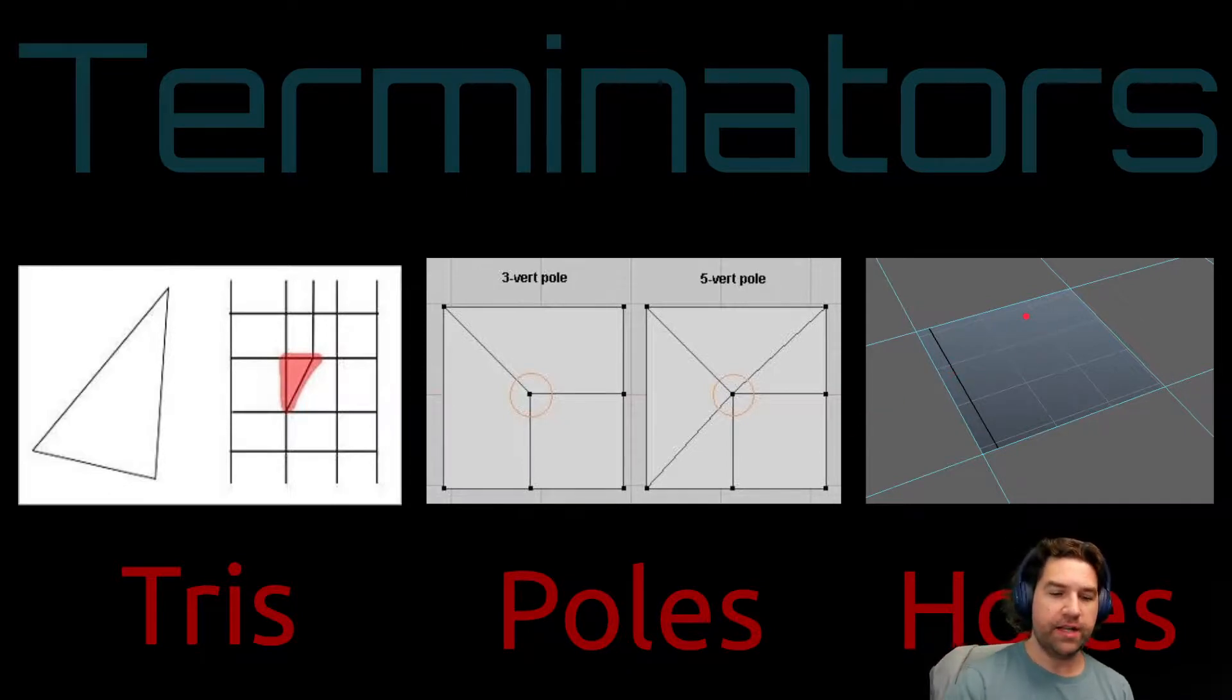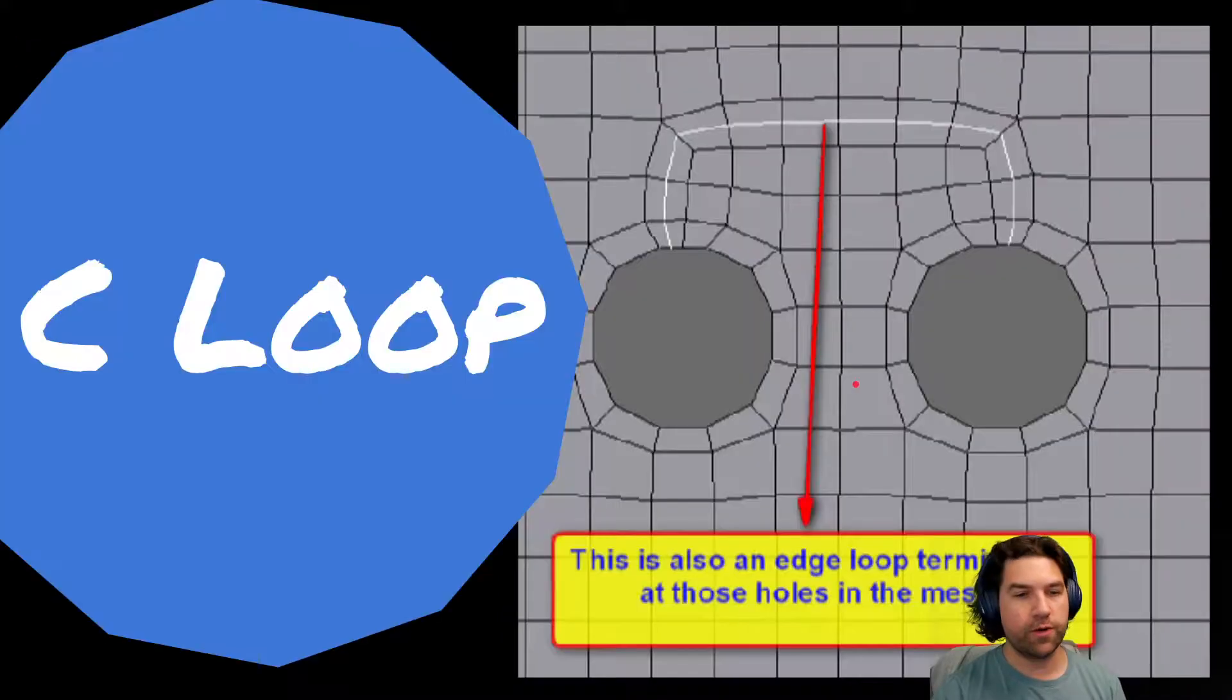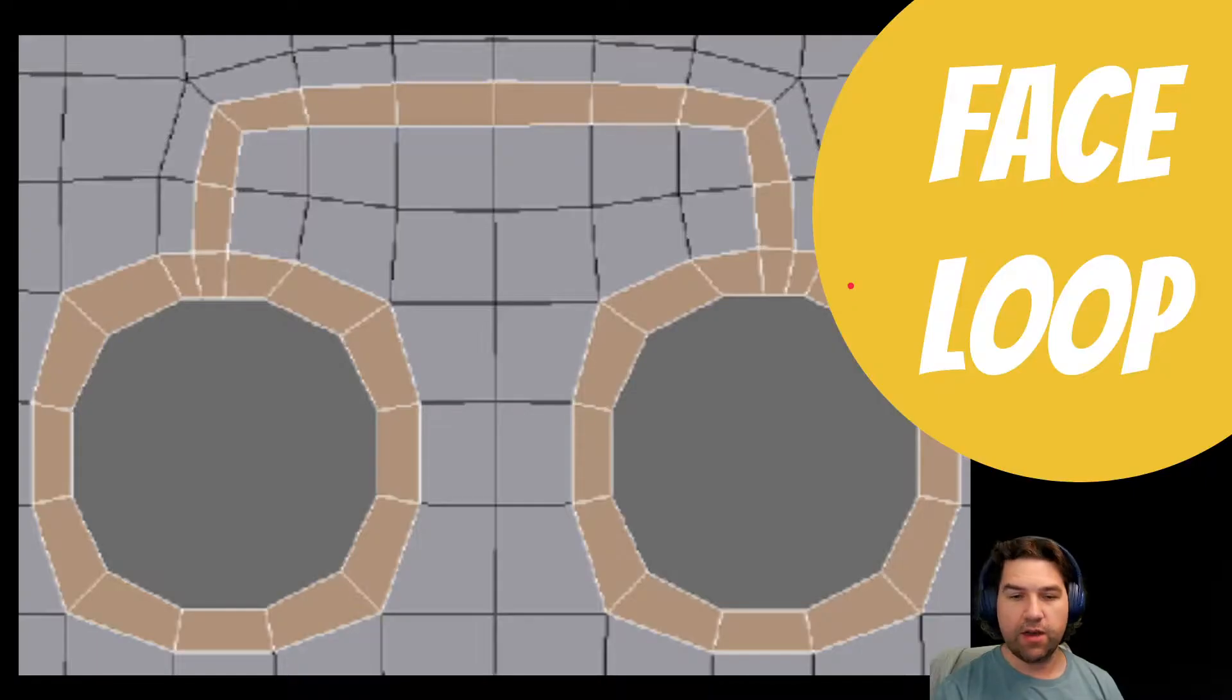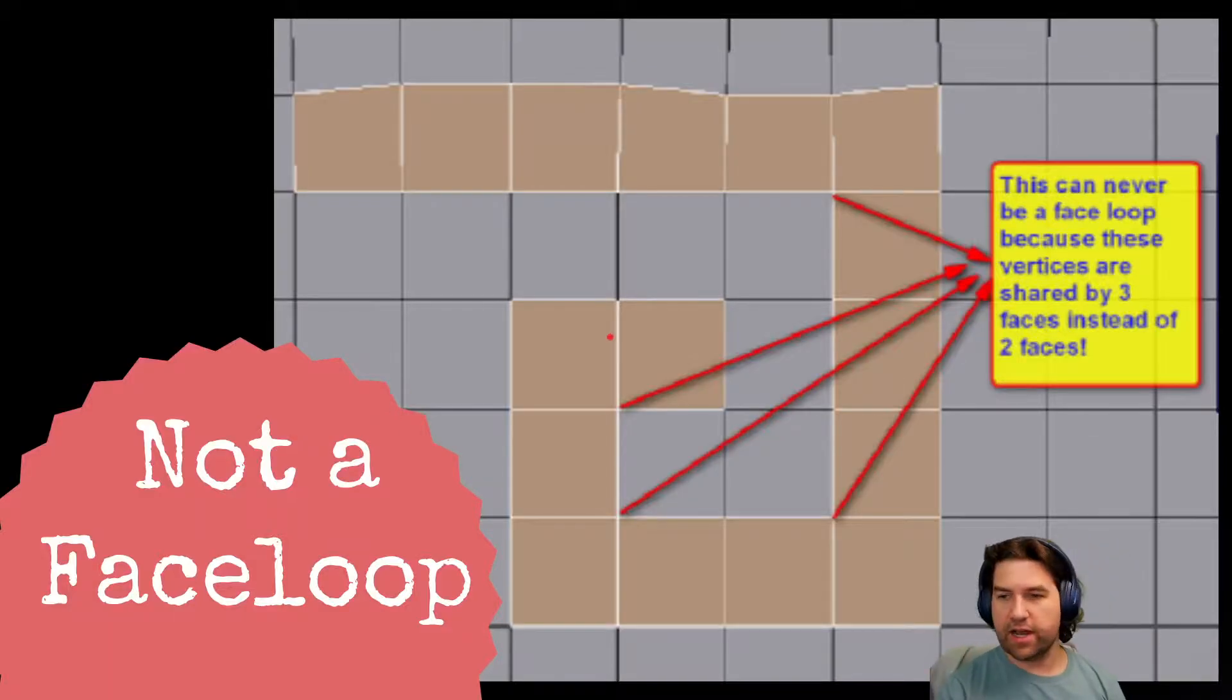Anytime that our loop ends, we call it a terminator. This can be a triangle or N-gon, so it can't find a way of dividing two edges. This can be any one of the poles and our selection will stop there, or just a hole, so if we draw a line through it'll stop because there's no more geometry to go for. We also have sometimes called C-loops. These are loops between two holes, often used for things like brows. And the face loop—this is just a face loop made of C-loops, not a face loop.